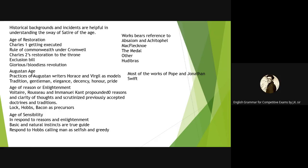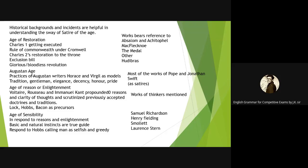In the Augustan Age, Horace and Virgil were the models practiced by Pope and Jonathan Swift — Pope being the perfectionist of the Horatian style. The Age of Reason and Enlightenment produced the works of Voltaire, Rousseau, and Immanuel Kant, with Locke, Hobbes, and Bacon as precursors. For the Age of Sensibility — our main focus is satire — the key writers are Samuel Richardson, Henry Fielding, Smollett, and Laurence Sterne, whose works can be compared with the spirit of sensibility.